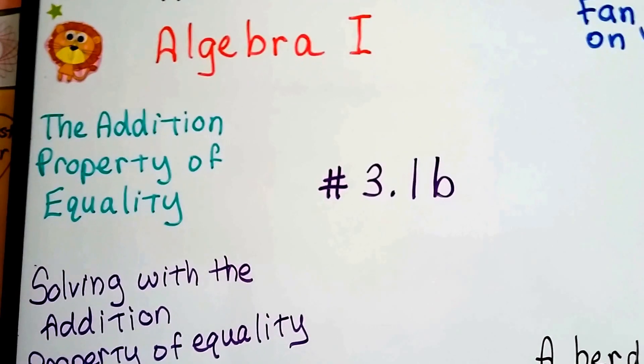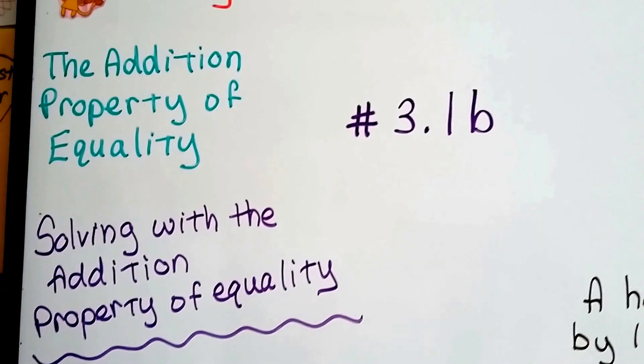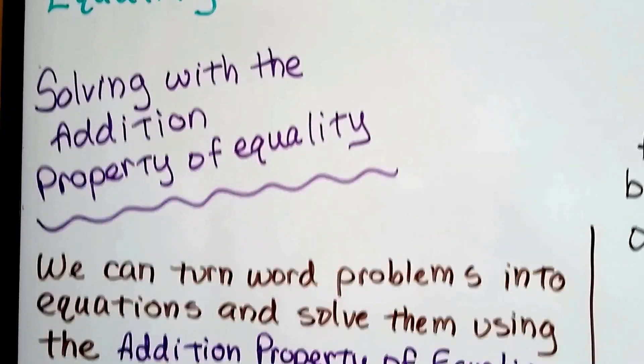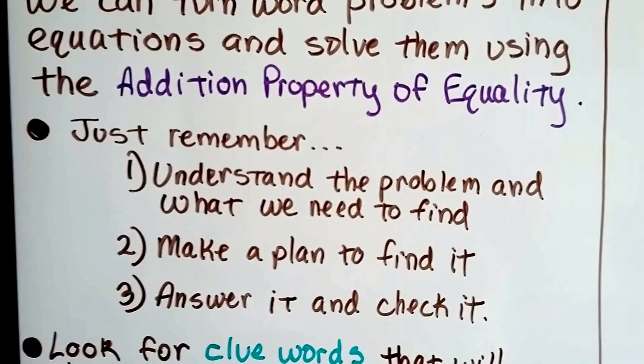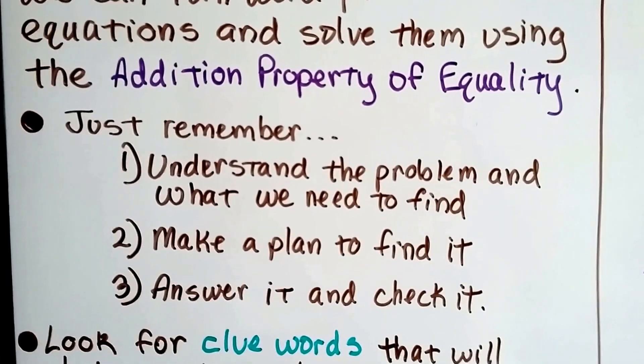Algebra 1 number 3.1b. We're talking about the addition property of equality in this unit. I'm going to talk about solving with the addition property of equality. So we can turn word problems into equations and solve them using the addition property of equality.